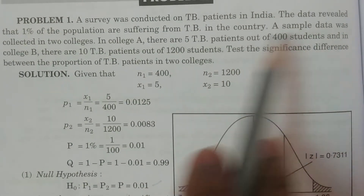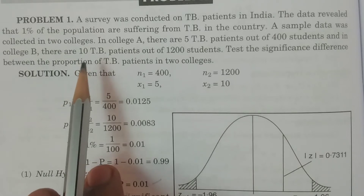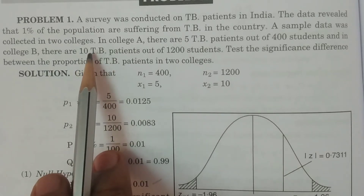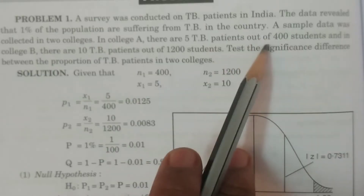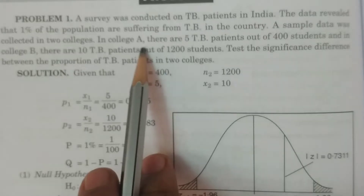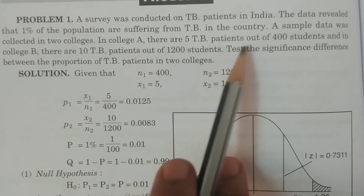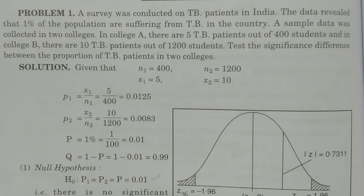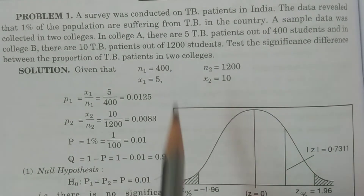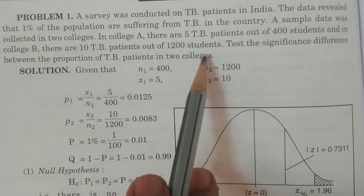Sample data was collected in 2 colleges. In College A, there are 5 TB patients out of 400 students. In College B, there are 10 TB patients out of 1200 students.